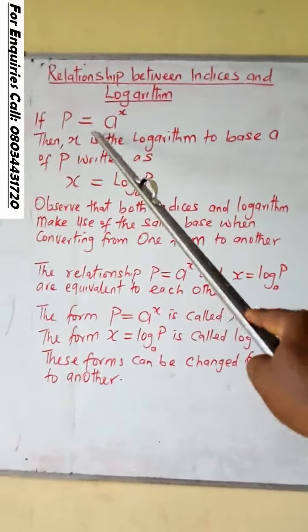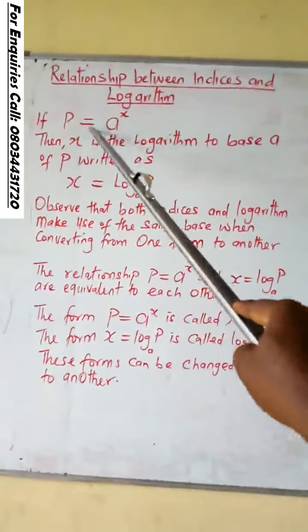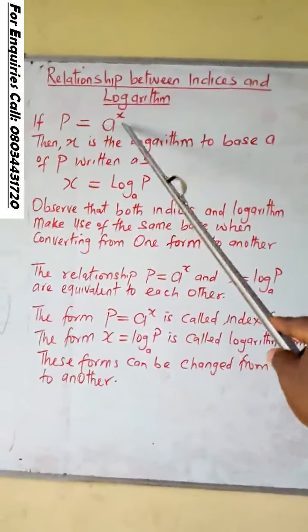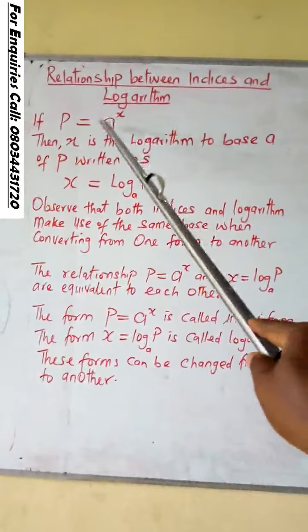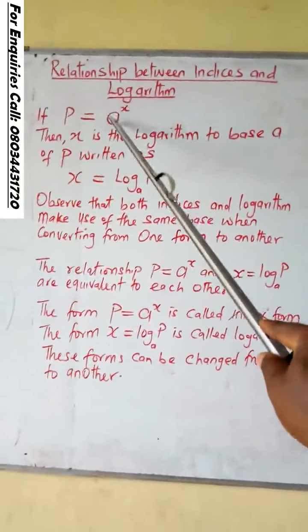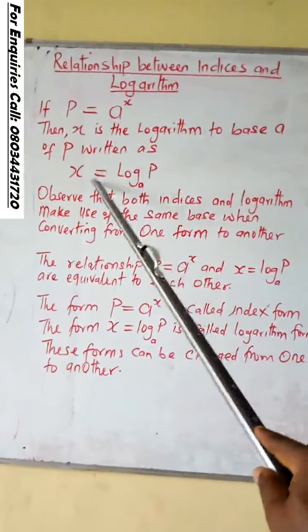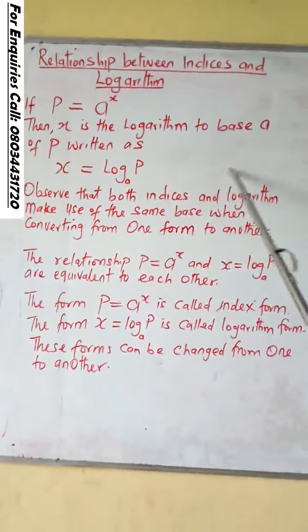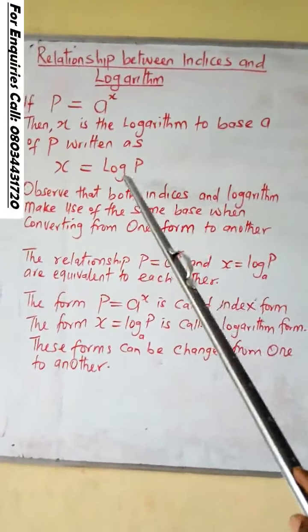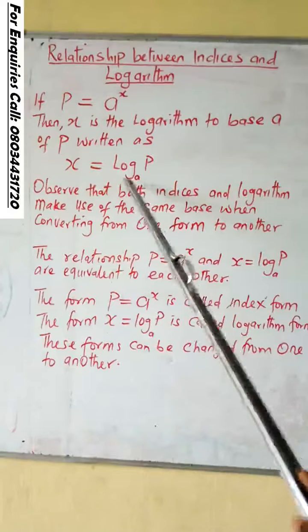Take a look at the expressions. The first expression is in this form, A to the power of X. The A there is the base. The second expression is a logarithm form. You look at it, A is also the base.